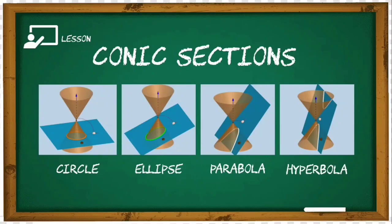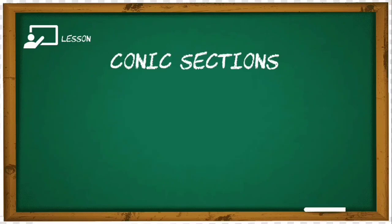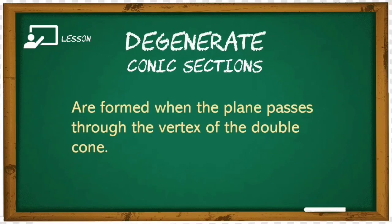What if the plane passes through the vertex of our double cone? That is when the idea of degenerate conic sections, or degenerate conics, comes in. By formal definition, degenerate conic sections are formed when the plane passes through the vertex of the double cone.